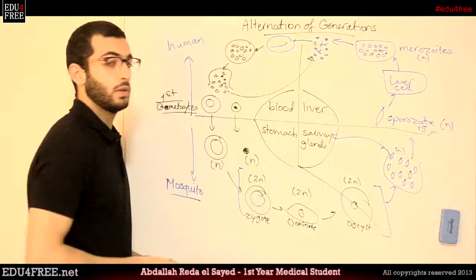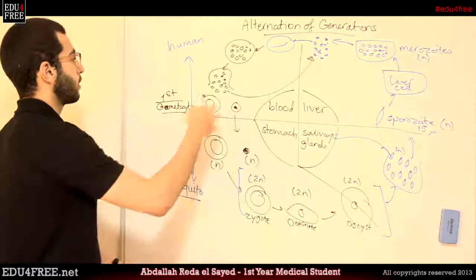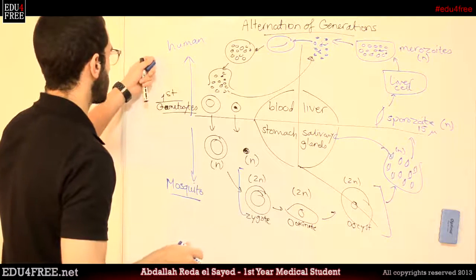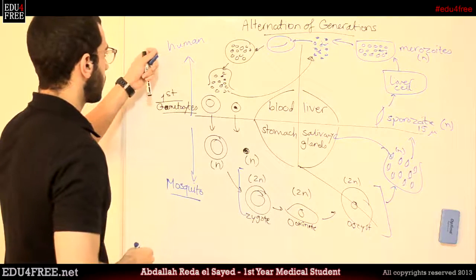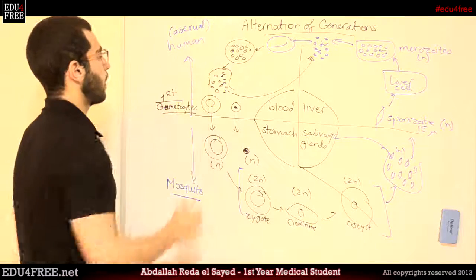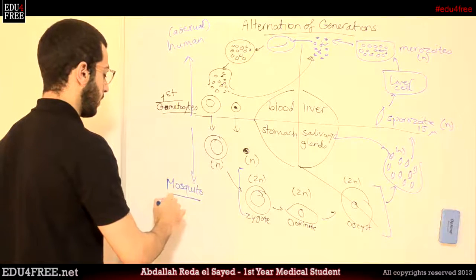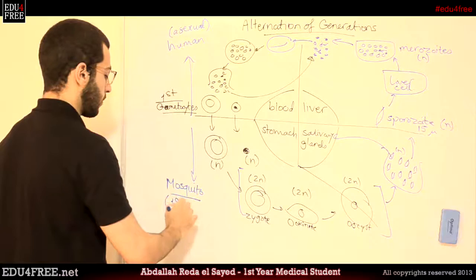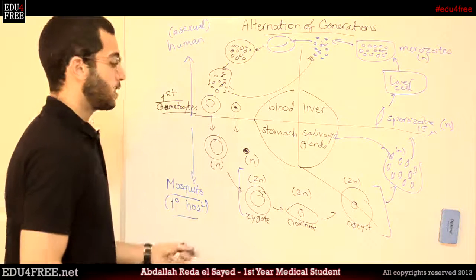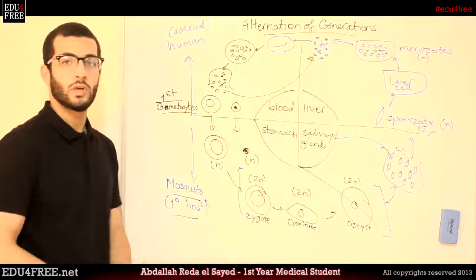The last thing to note is that the human in this cycle is not considered a primary host — it is a secondary host because inside the human, asexual reproduction occurs. The primary host is where the sexual reproduction occurs, so it is the mosquito. The mosquito is the primary host in this life cycle. That is it for today; I hope it was clear and thank you for watching.